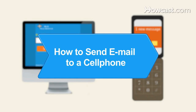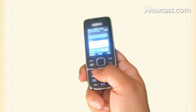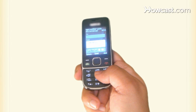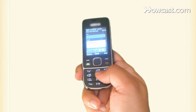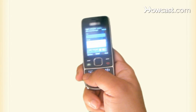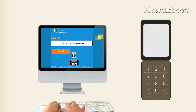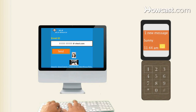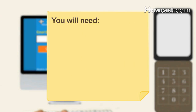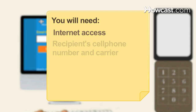How to Send Email to a Cell Phone. Tired of tapping out text on tiny keys with your thumbs? Try sending an SMS text to your friend's cell from the comfort of your computer's full-sized keyboard instead. You will need a computer with internet access, and the recipient's cell phone number and carrier.